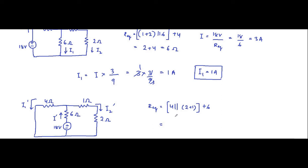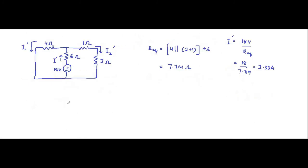The total equivalent resistance comes to approximately 7.714 ohm. I dash is equal to 18 volt by R equivalent, which is 18 by 7.714, equal to 2.33 ampere.